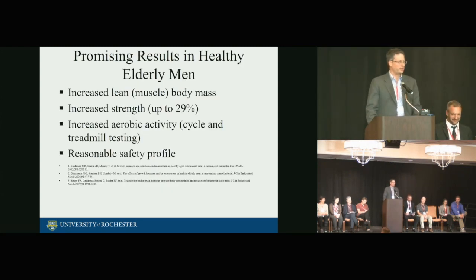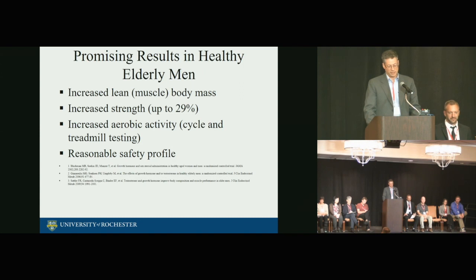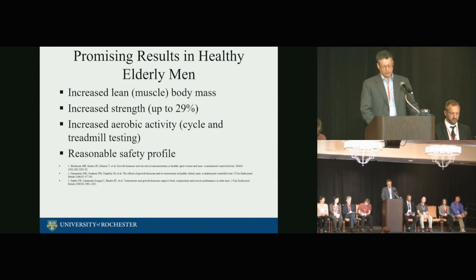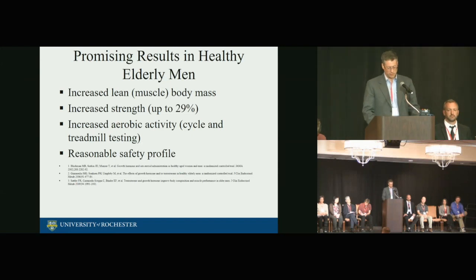The study was based on data from three large studies conducted in healthy elderly men combining these two therapies. This is one of the rare therapeutic approaches that not only increases muscle mass but potentially also increases function and strength. The increase in lean muscle mass was about 10 pounds in one study; strength increased up to 29% on a composite strength measure; aerobic activity improved on cycle and treadmill testing; and all three studies showed a reasonable safety and tolerability profile.